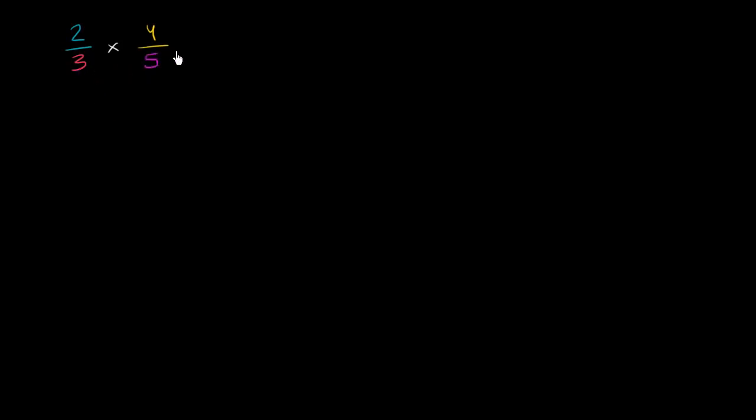In a previous video, we've already seen how we can compute this. In the numerator, we multiply the numerators, so it's 2 times 4. In the denominator, we multiply the denominators, so it's 3 times 5. The numerator is 8 and the denominator is 15. This is as simple as we can make it since 8 and 15 don't have any common factors other than 1.